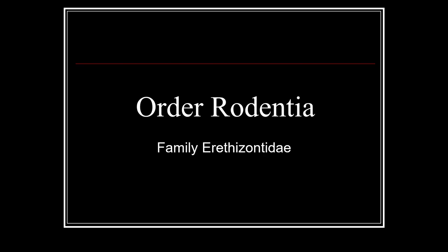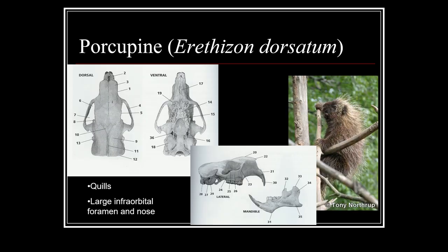Next is Family Erethizontidae, and the only member we have is the porcupine, Erethizon dorsatum — one of my favorite scientific names. Another skull you'll need to know: there are really large infraorbital foramina, which is your key identifying characteristic for this species. You can't really see it in the slide pictures, but it's very clear in the skull video, so make sure to watch that. And of course this species has quills.